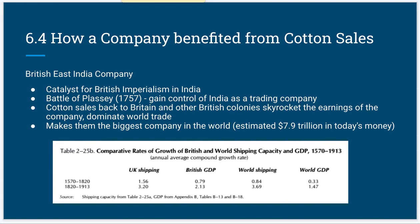One company that benefited from the sale of cotton was, of course, the British East India Company. They were pretty much a catalyst for British imperialism in India. They gained control over India, transitioning from a trading company to essentially a whole empire in India, at the Battle of Plassey in 1757. After this, cotton sales back to Britain and other colonies were skyrocketing, helping them dominate world trade. It is estimated that the worth of the company would be about $7.9 trillion in today's money.